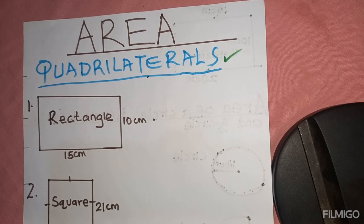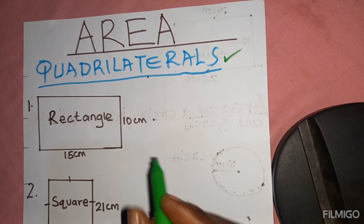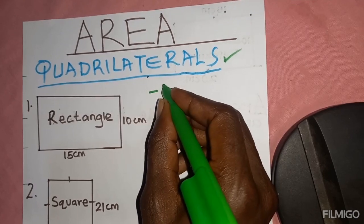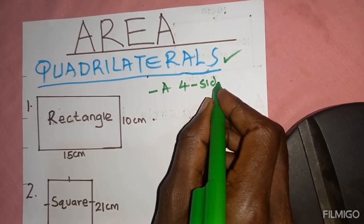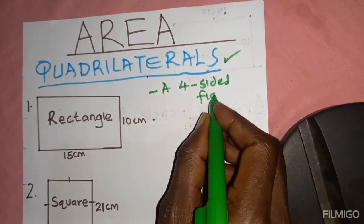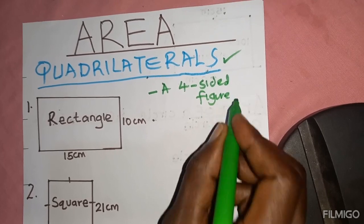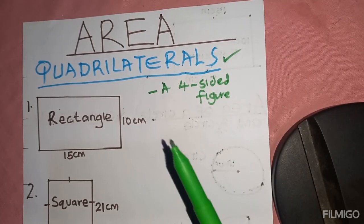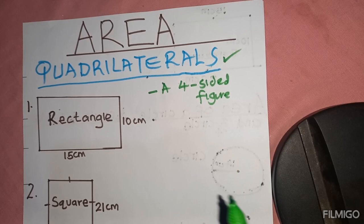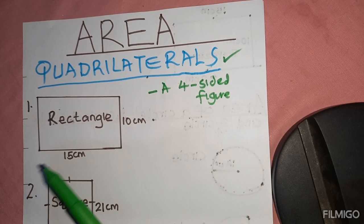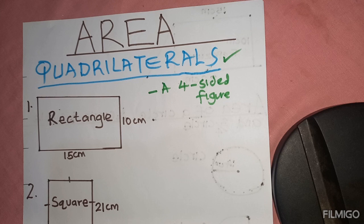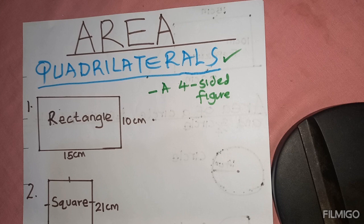A quadrilateral is a four-sided figure. So here we are going to deal with the area of five figures: area of a rectangle, area of a square, parallelogram, rhombus, and we end with a trapezium. So we have five quadrilaterals.